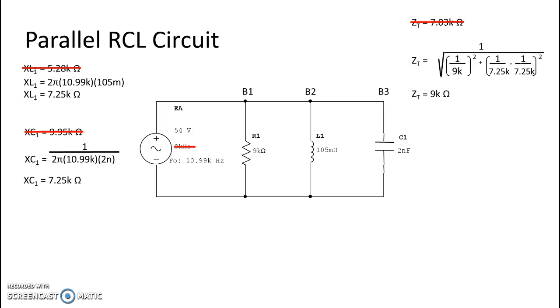So our impedance for the circuit is now 9 k ohms, which is the resistance value.